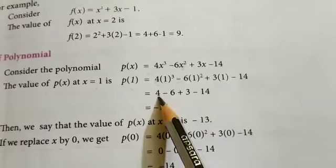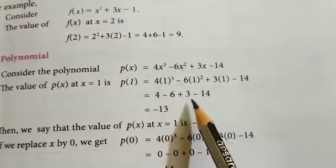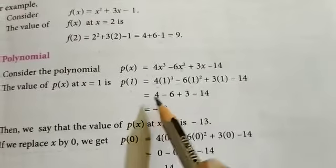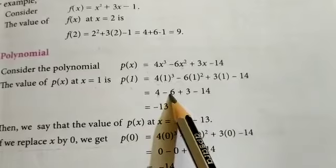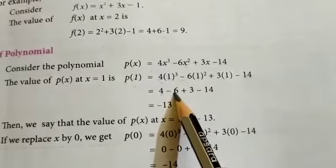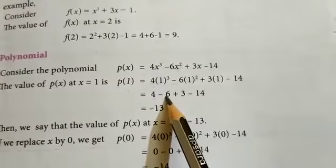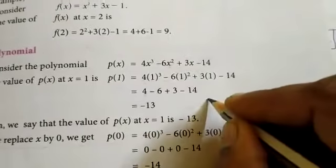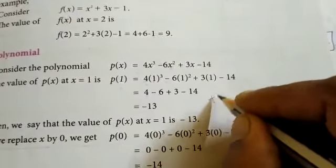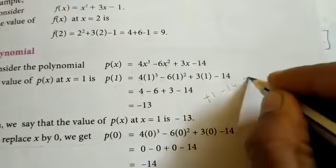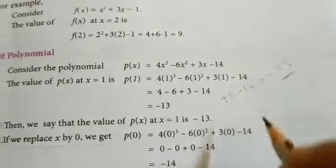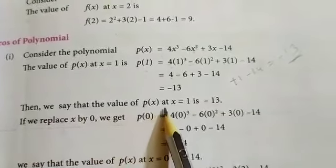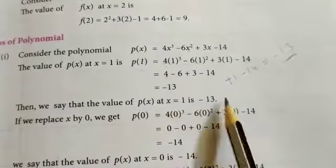So 4 plus 3 is 7, then 7 minus 6 is 1, so plus 1 minus 14, that is equal to minus 13. Then we say that the value of p of x at x equal to 1 is minus 13.